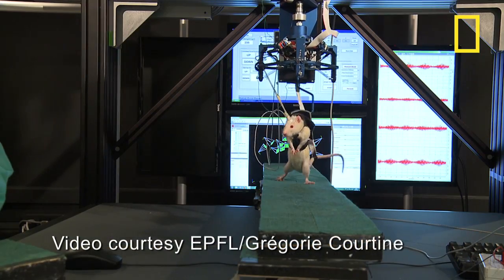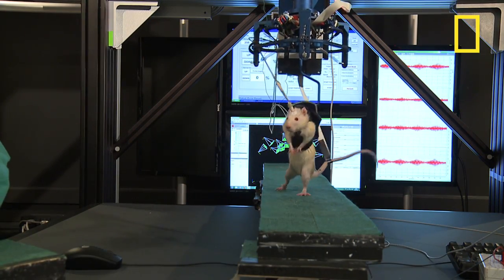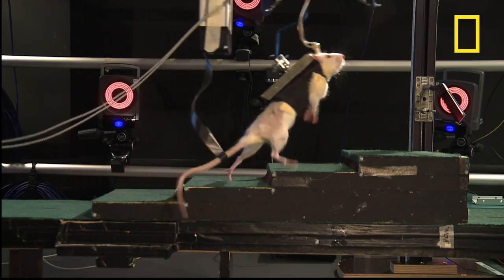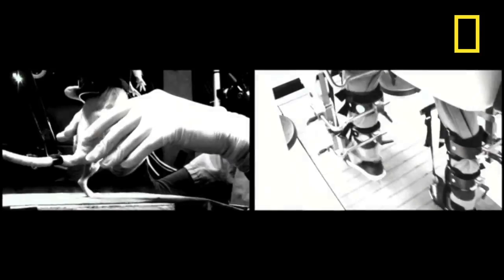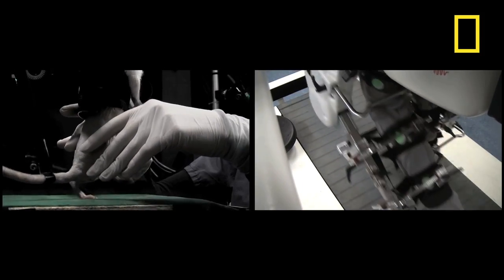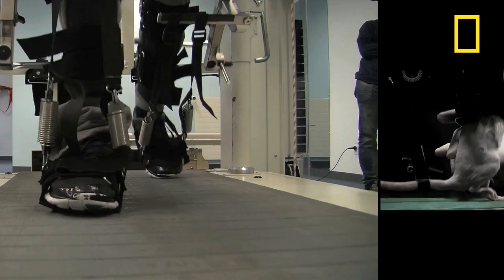Researchers have found a way to rehabilitate paralyzed rats with severed spinal cords to begin walking on their own again. The breakthrough could be a step toward rehabilitating humans with similar injuries.